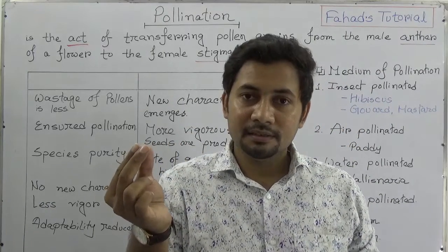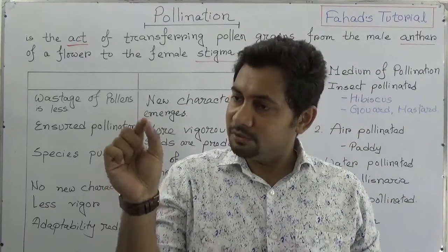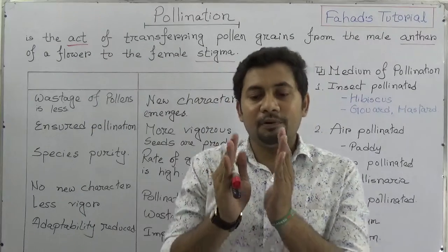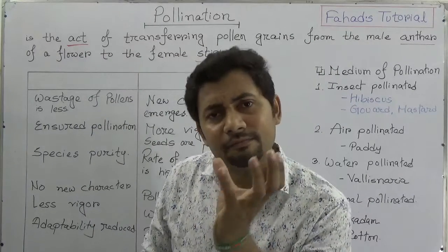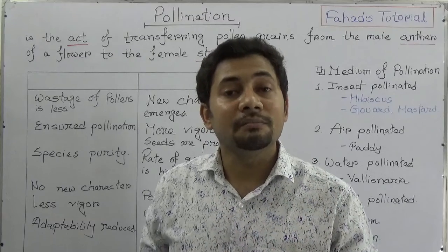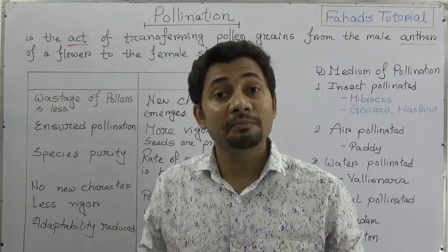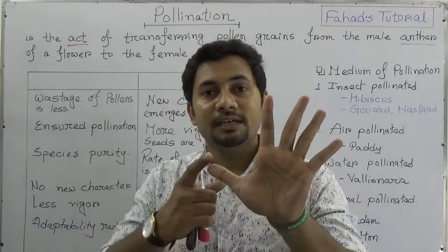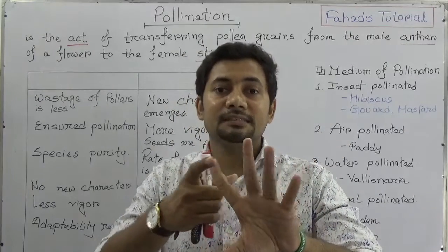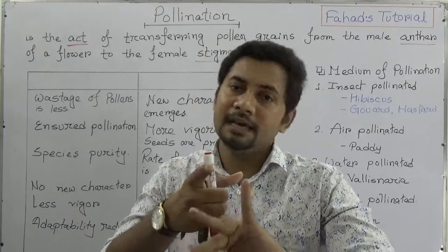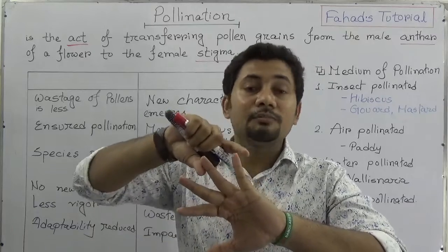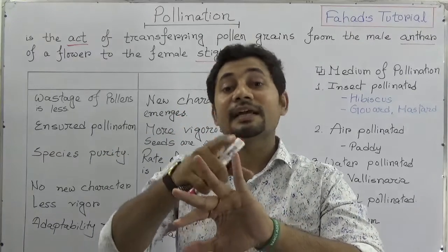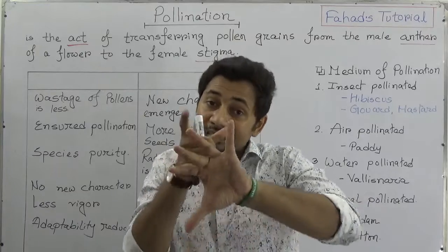The anther is the male part of the Androsium, so pollens are transferring. In the same flower — bisexual or complete flowers have five parts: thalamus, calyx, corolla, Androsium, and Gynesium. So one single flower can contain both Androsium and Gynesium.